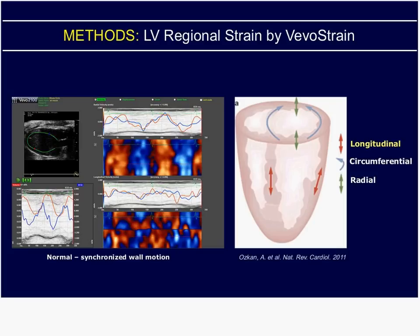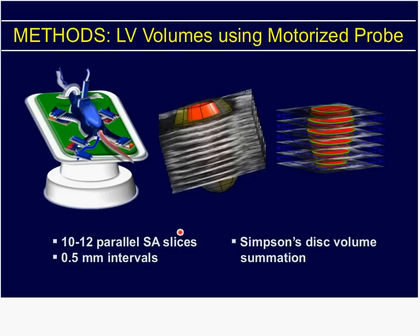We've done this because we've invested so much in the mice at this point that it only makes sense to spend an equal amount of effort on the analysis. By Simpson's disk volume summation, we can determine our LV volumes as well as the volume of the muscle mass.